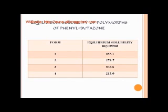The 4th form has the lowest solubility at 213 mg/100 mL. So finally, it will be the form that predominates in the supersaturated solution of phenylbutazone. We can also say that a large number of crystals formed in a phenylbutazone supersaturated solution will be of the 4th polymorphic form.